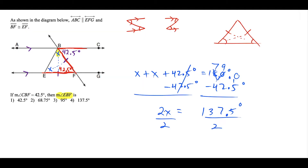Now divide by 2. Two goes into 13 six times with one left over; into 17 eight times with one left over; into 15 seven times with one left over; into 10 five times evenly. So X equals 68.75 degrees. Since the question asks only for angle EBF, which we called X, the answer is 68.75 degrees — definitely choice two.